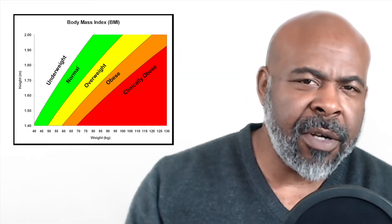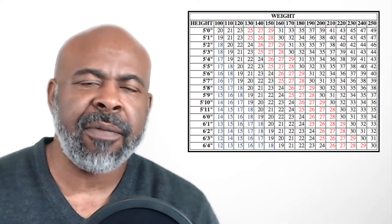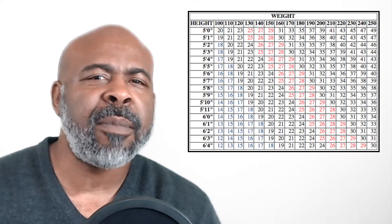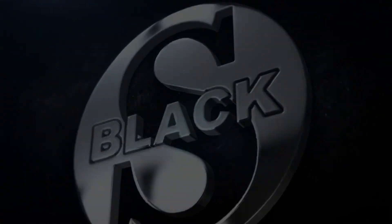The BMI, or body mass index, is a figure we calculate using height and weight. Technically, it is the body mass divided by the square of the body height. Lots of charts and tables make it easier to understand or calculate the BMI, and they offer conversions to different units like inches, pounds, kilograms, and meters. When we apply the BMI to African Americans or Black people in the United States, we get some interesting data, and that's what we're going to talk about in this video.